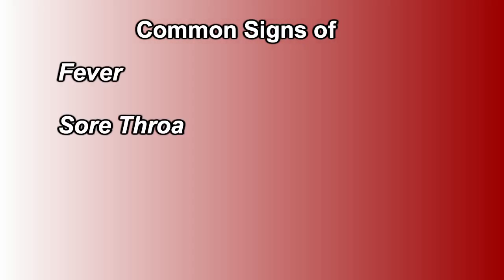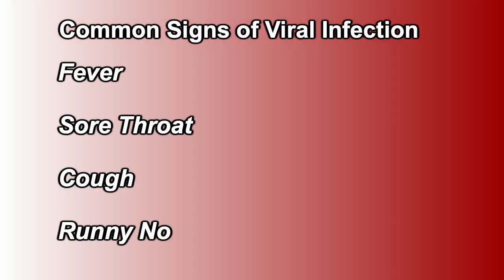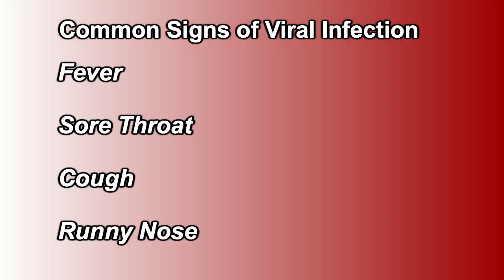Oftentimes it'll present with a prodrome of a viral illness like a fever, a sore throat, a little bit of a cough, a runny nose, and shortly after that people will start to develop redness in their eyes as well, which is so classic for what we call conjunctivitis.